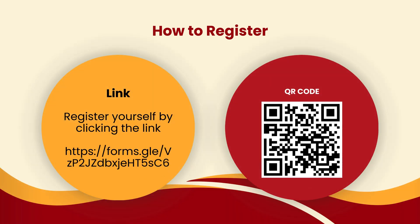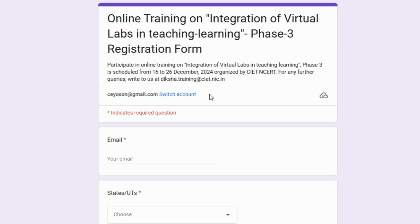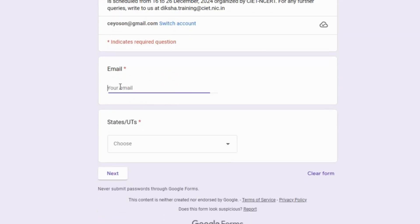Let's go over how to register. You can either scan the QR code displayed on the screen or click the registration link available in the description box below. Once you do that, the registration form will appear for you to fill out. This is the registration form for integration of virtual labs in teaching and learning phase 3.